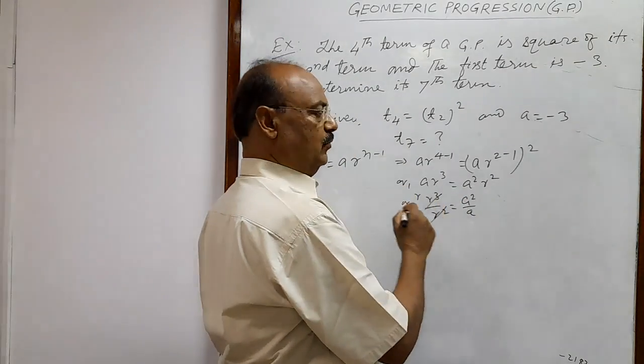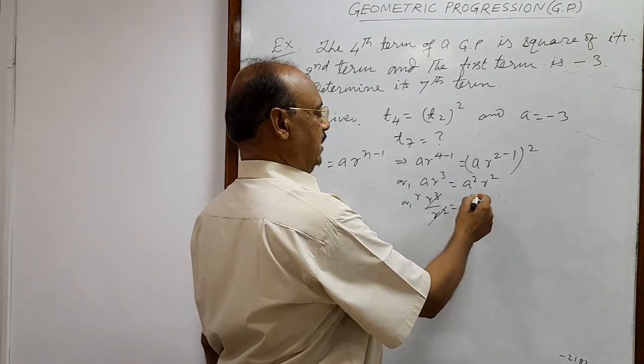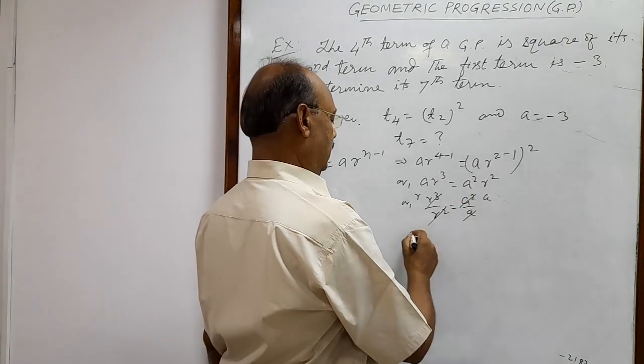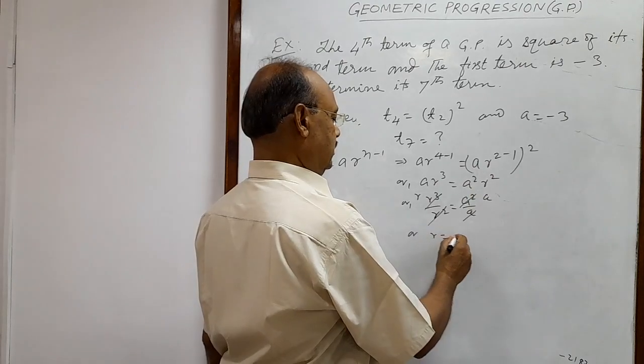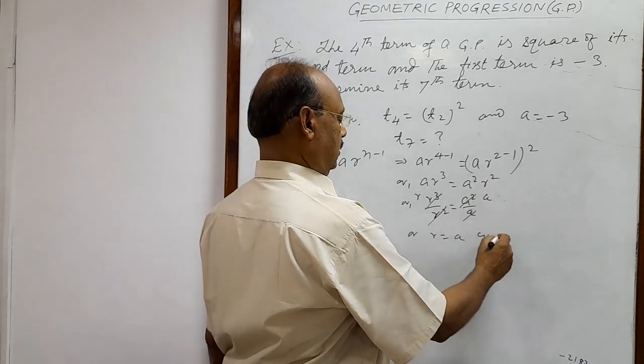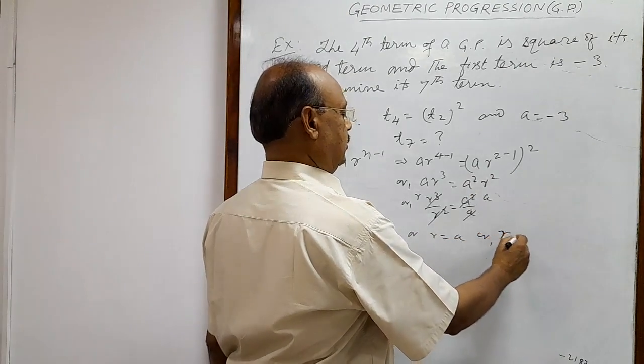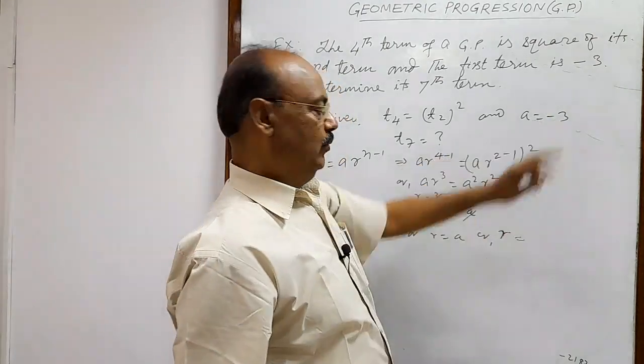Here R square will be cancelled out, so we are getting R. And similarly, A square is cancelled out with A. We are getting A. So R is equal to A, or R is equal to how much? A is minus 3.